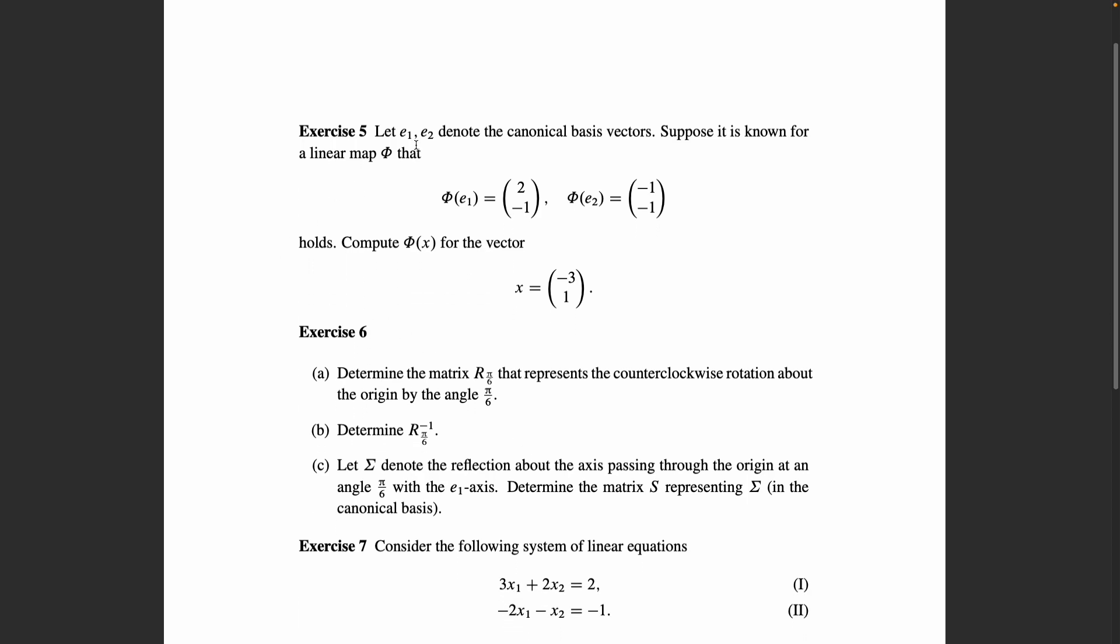Exercise five: e1 and e2 denote the canonical basis vectors, so the one with entries 1, 0 and this one with entries 0, 1. Now we have a linear map about which we only know that it maps the first canonical basis vector to the vector 2, -1 and it maps the second canonical basis vector to the vector. Now your task is compute phi of x for this vector here if all you have is this information.